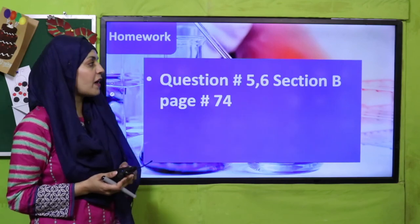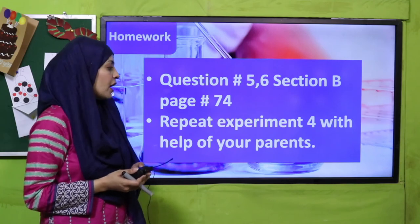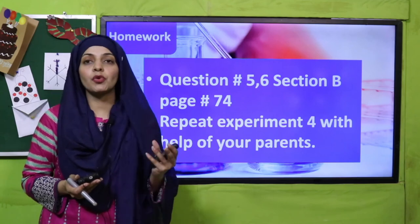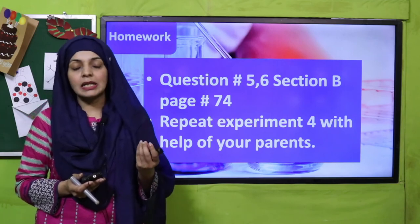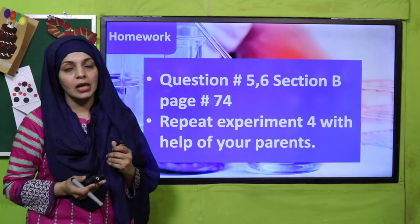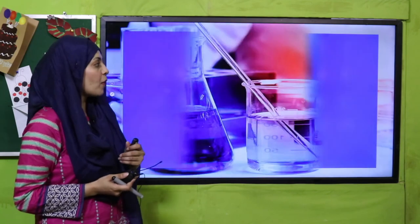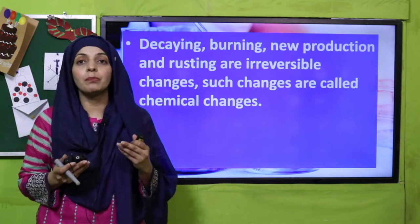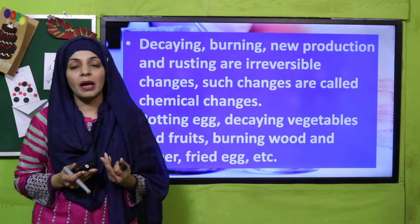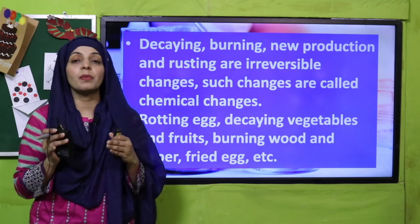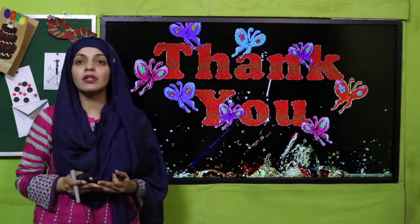For homework, do questions number five and six from section B on page number 74 in your notebooks, and repeat the experiment with the help of your parents at home — heat products like ice, bread, eggs, chocolate, and newspaper, and observe which are reversible and which are irreversible changes. The wrap-up of today's lesson: we learned about different chemical changes like burning, decaying, rusting, and the releasing of gases. These are all irreversible chemical changes. Always remember: in a chemical change, a new product is formed. I hope you enjoyed today's lecture. Keep everybody around you safe. Have a good day. Thank you so much, Allah Hafiz.